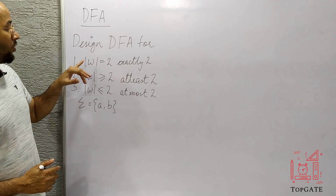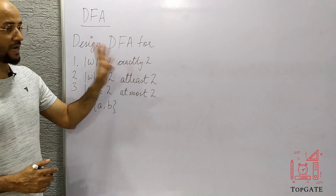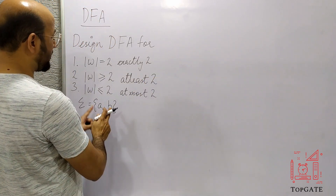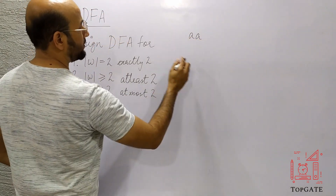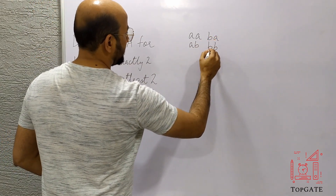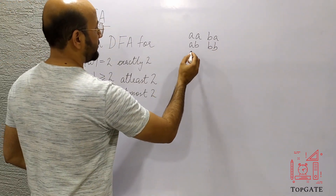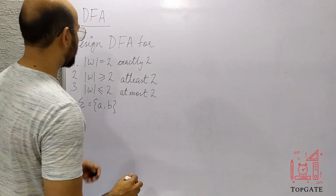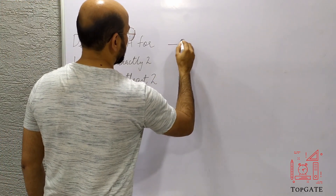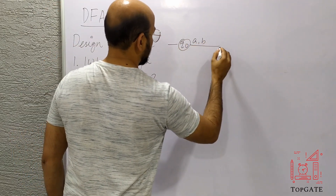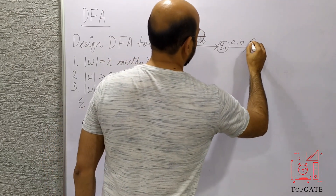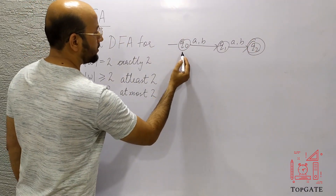The first DFA accepts all strings over {a, b} having length exactly two. So sigma = {a, b}, and the strings of length two are: aa, ab, ba, bb. We need a DFA that accepts all four of these strings. Starting from initial state q0, on input a or b we go to q1, then again on a or b we go to q2, which we make the final state.